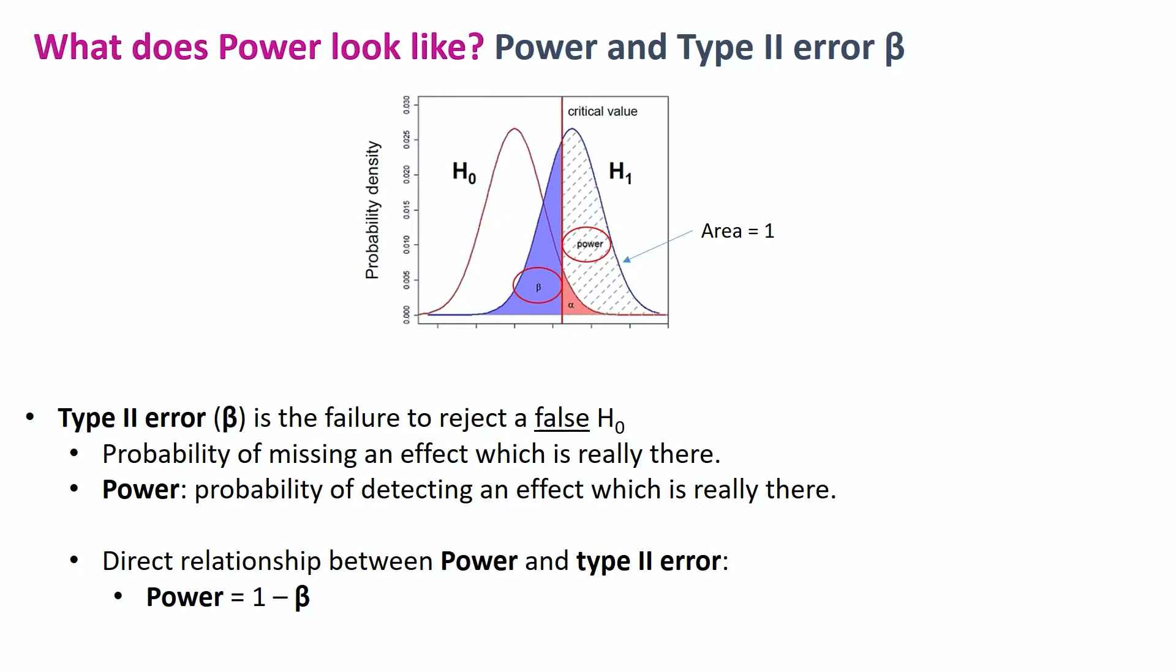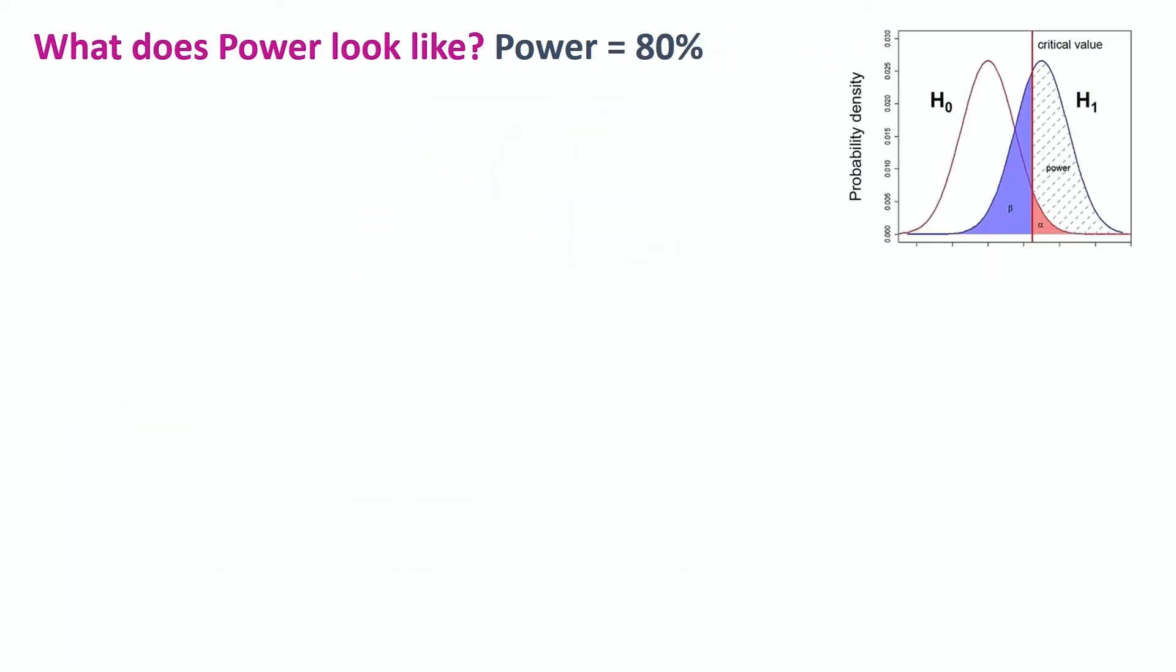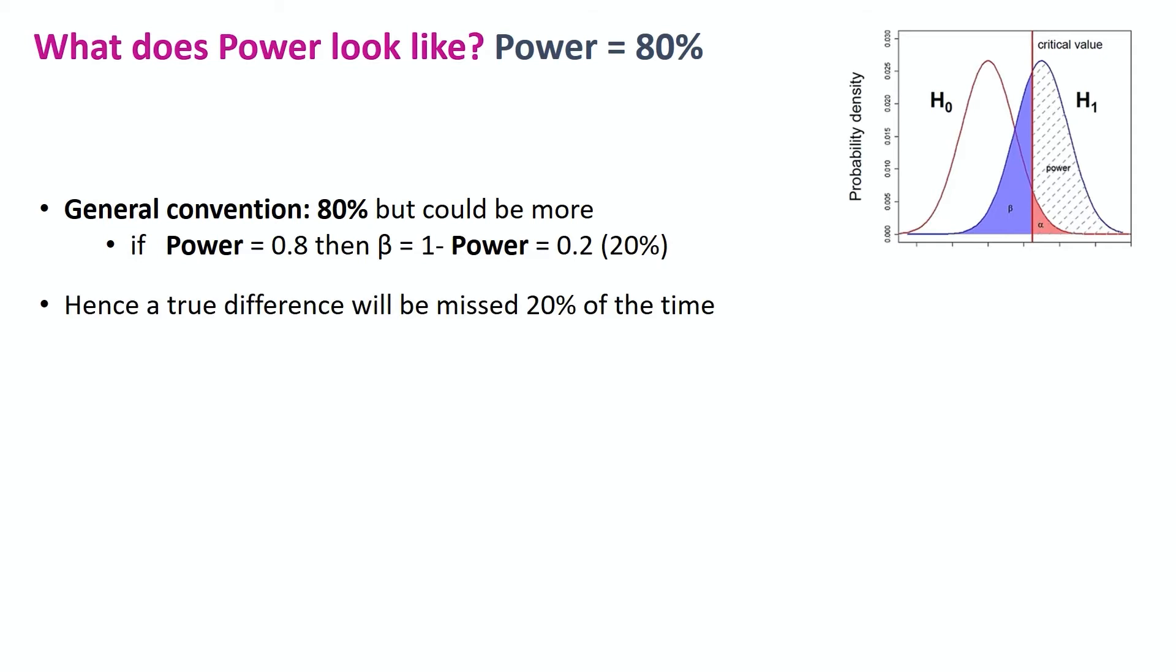Okay, so the general convention is that power equals 80%. So keeping in mind the relationship between power and beta, it follows that the accepted beta is 20%, which means that a true difference can be missed in 20% of the time, which is pretty high, right?